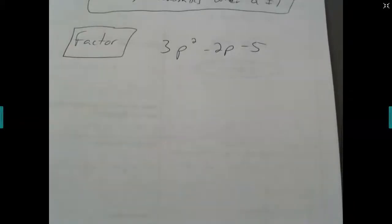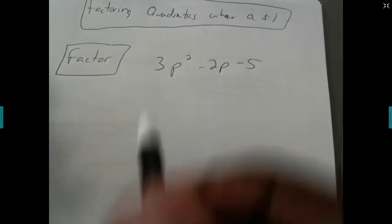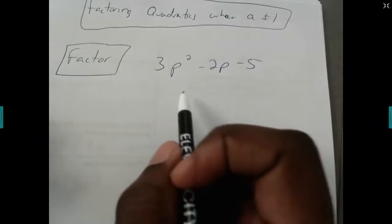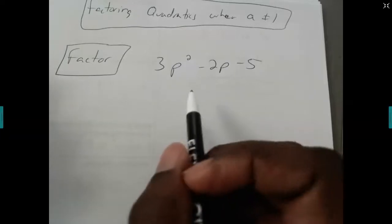Alright, so this video is about factoring quadratic trinomials when a is not equal to 1. We've talked about how to factor when a is 1. In this case, you have a number that's in front of p squared or x squared that isn't 1.